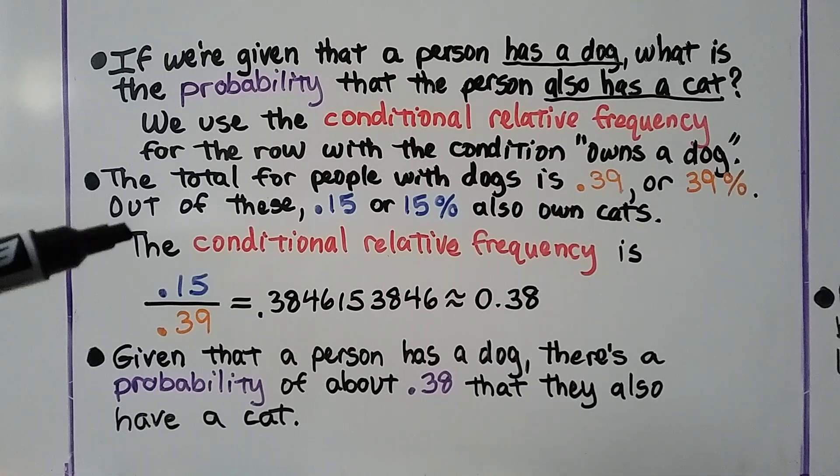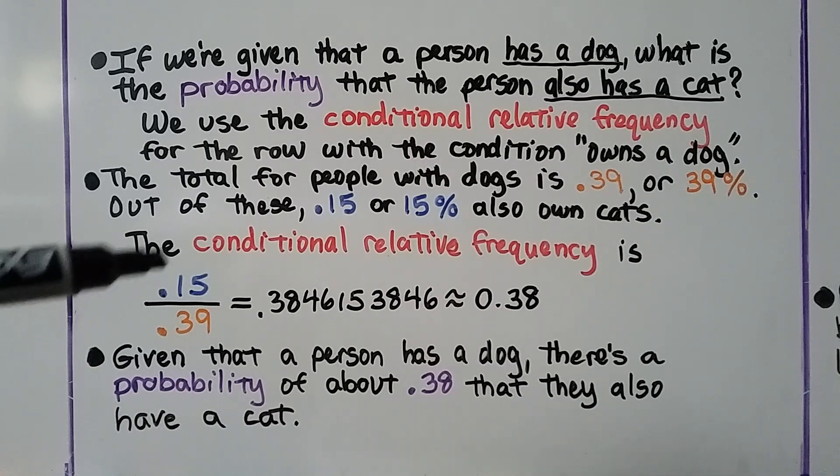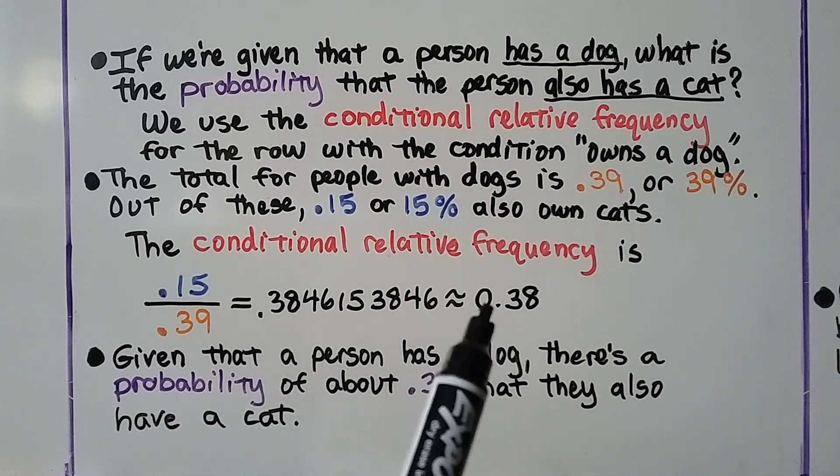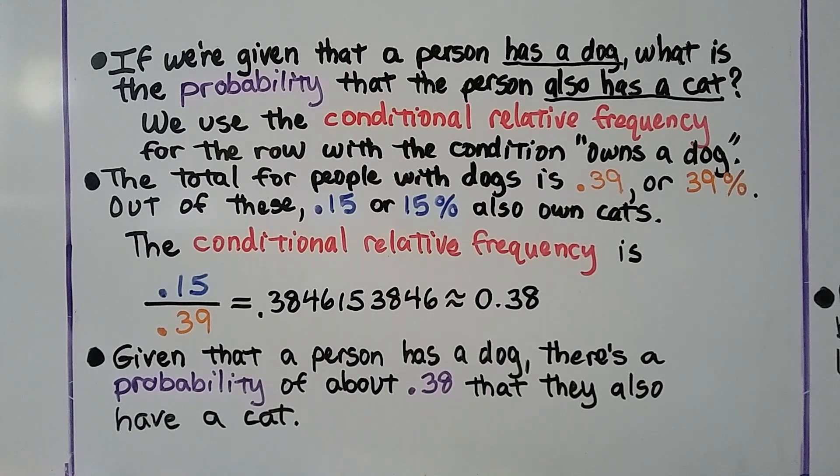The conditional relative frequency is the quotient of 0.15 and 0.39. We get this nice long decimal, which we can round to approximately 0.38. So, given that a person has a dog, there's a probability of about 0.38 that they also have a cat out of these 100 randomly selected people that were asked.